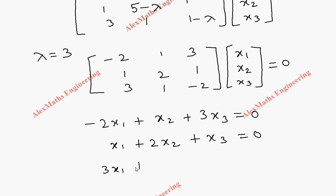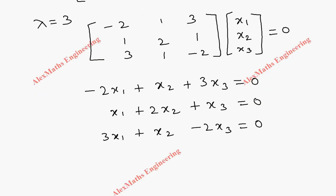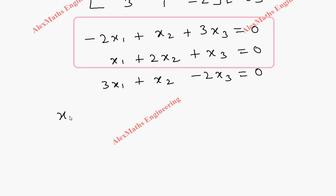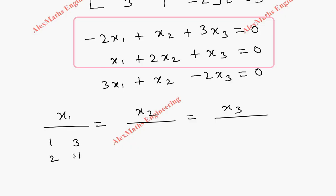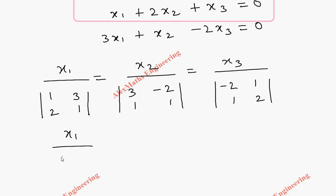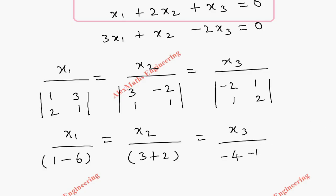The third equation is 3x1 plus x2 minus 2x3 equals 0. Taking the first and second equations and applying the cross-multiplication method: x1 over, x2 over, x3 over. For x1, the determinant of coefficients of x2 and x3 gives 1 minus 6 equals minus 5. For x2 it gives 3 plus 2 equals 5. For x3 it gives minus 4 minus 1 equals minus 5.